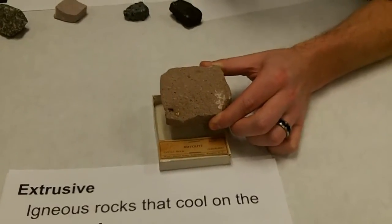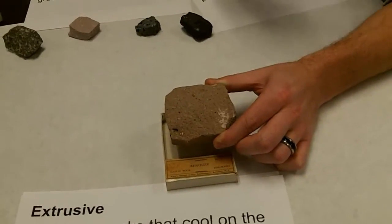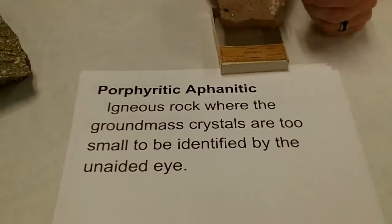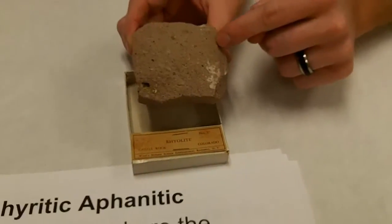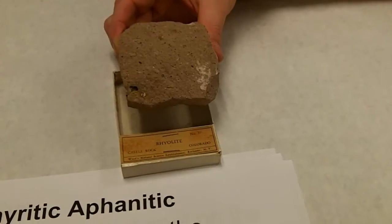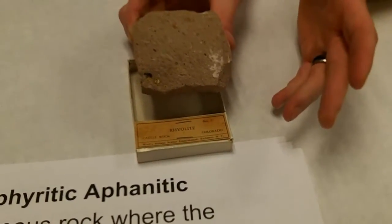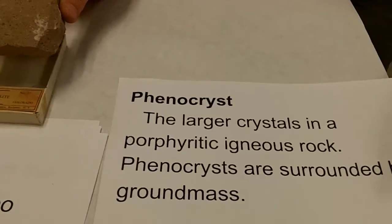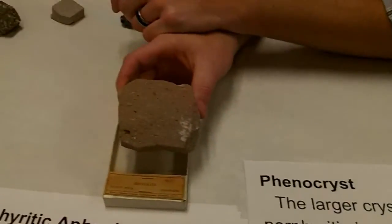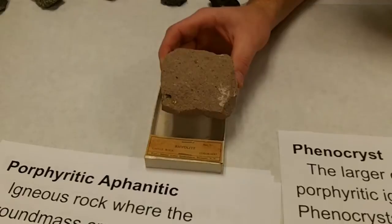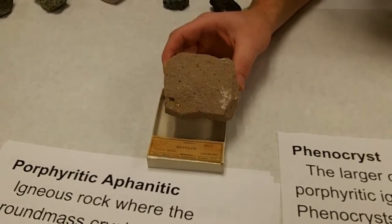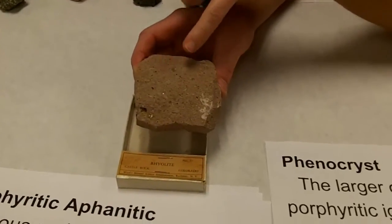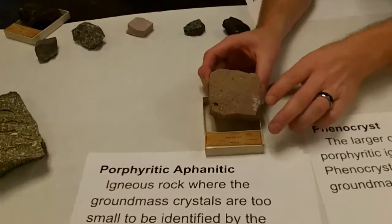Do you remember what we called it when there were two-sized crystal grains? Porphyritic! So the definition of porphyritic aphanitic is an igneous rock where the ground mass — the background rock, the pink here — has crystals too small to be identified by the unaided eye. The larger crystals are called phenocrysts. The larger crystals cooled deeper underground because it takes a while for them to cool, allowing big crystal growth. Then the magma moved to the surface and cooled much faster, forming that fine-grained ground mass.